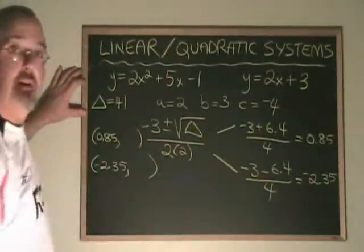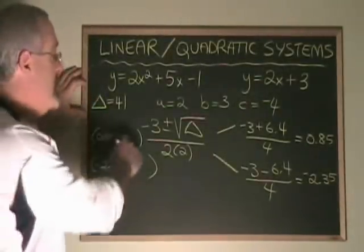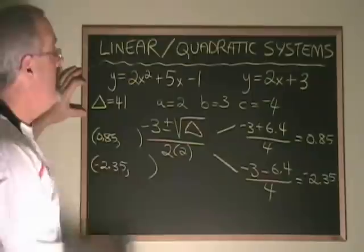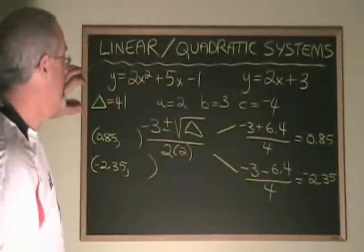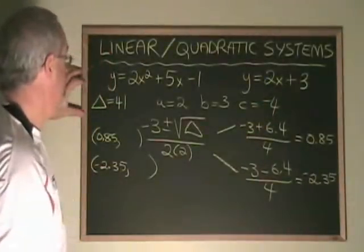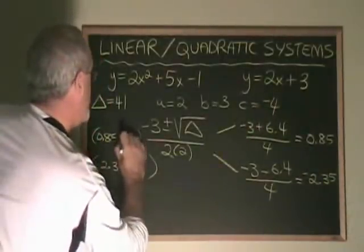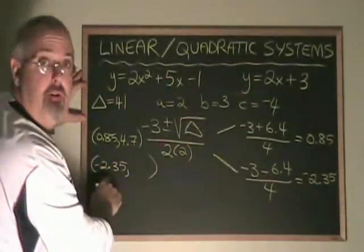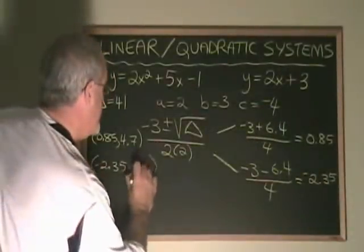If we plug these two x-coordinates into either of the equations, then we will get the y-coordinates of the points where this line crosses this parabola. We will plug these numbers into our straight line because it will be faster and easier. 2 times 0.85 is 1.7, and 3 plus 1.7 is 4.7. 2 times negative 2.35 is negative 4.7, and negative 4.7 plus 3 is negative 1.7.